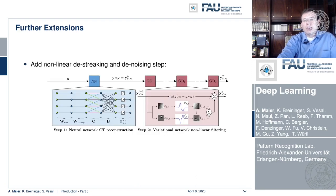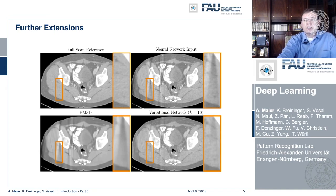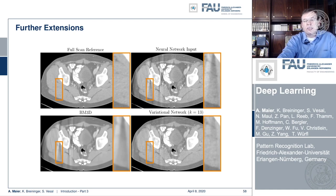You can also combine this reconstruction method with an additional de-streak and denoising step, which can dramatically improve low-contrast visualizations. Here you see the full-scan reference on the top left, the neural network output on the top right with significant streaks, and on the bottom right a streak reduction network that really reduces those streaks caused by the angular limitation. Compared to a plain denoising approach on the bottom left, those streaks would be diminished but still present. Only a trained method that understands what the problem is can efficiently reduce those artifacts.